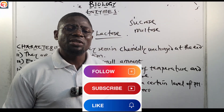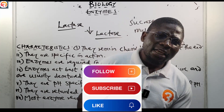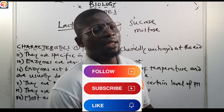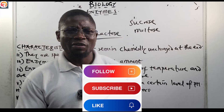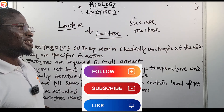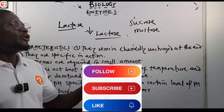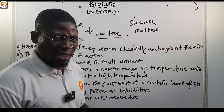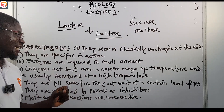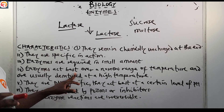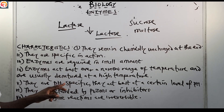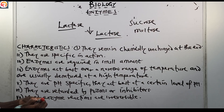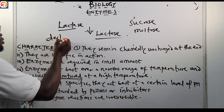If you have not liked this video, please click on the like button and share it with your class group and friends so they can also benefit. Now, characteristic number three: enzymes are required in small amounts. Number four: enzymes act best over a narrow range of temperature and are usually denatured — meaning destroyed — at very high temperatures.